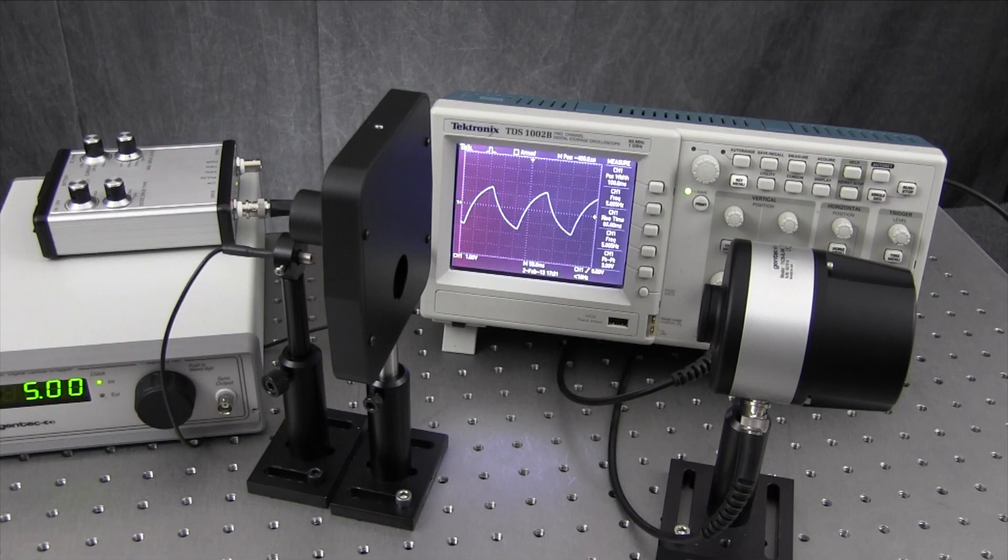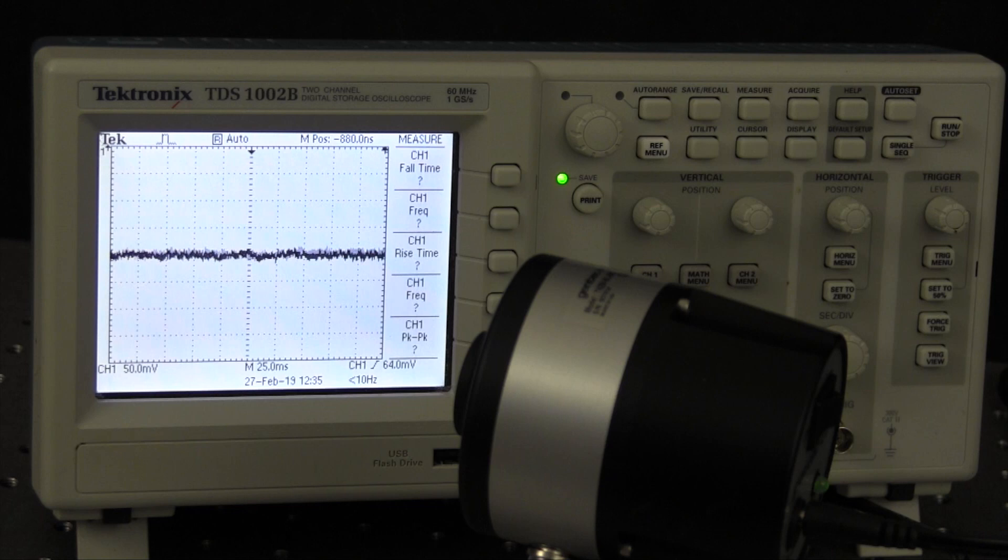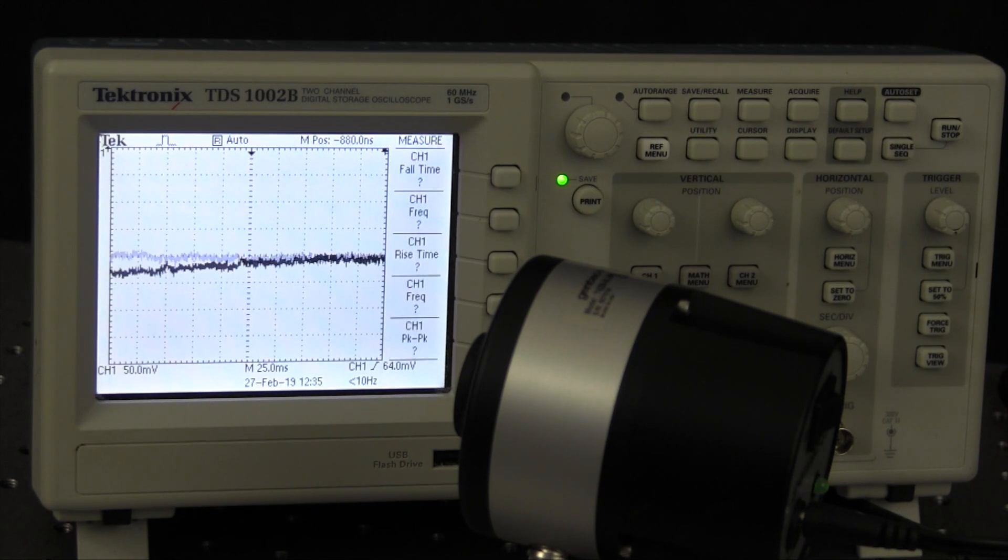I have a few more things I'd like to show you. First, let's take a look at what to expect in terms of an analog noise floor when used in a typical lab environment. I've set the scope to 50 millivolts per division and 25 milliseconds per division.